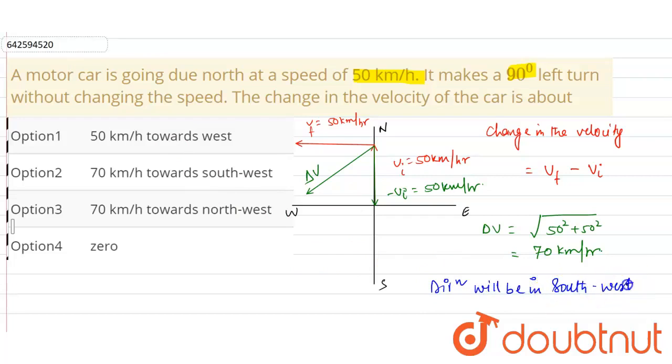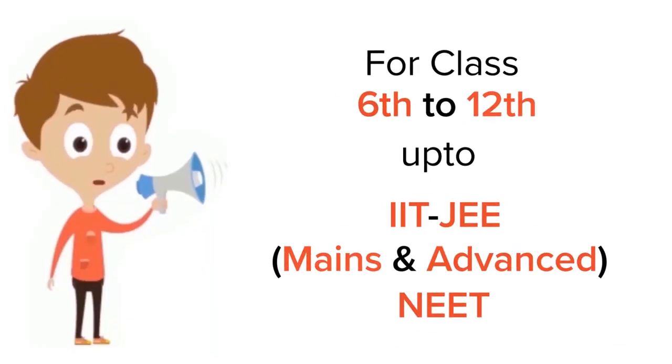So from the given options we can say that the option number two, that is 70 kilometer per hour towards southwest, is the correct option. Okay, thank you.